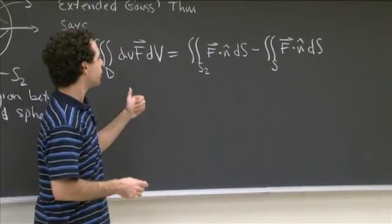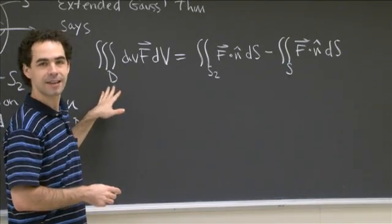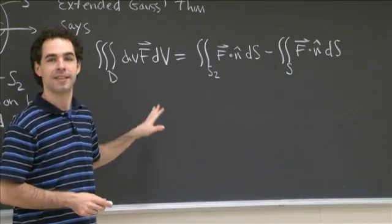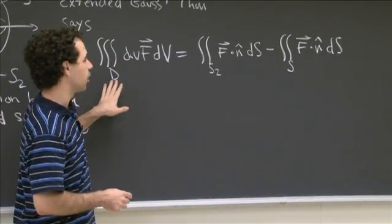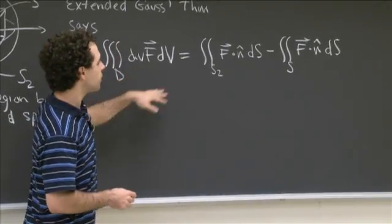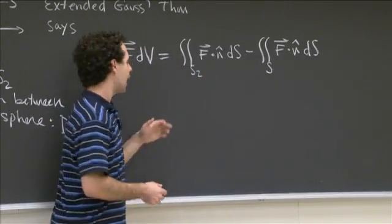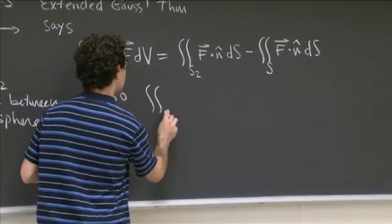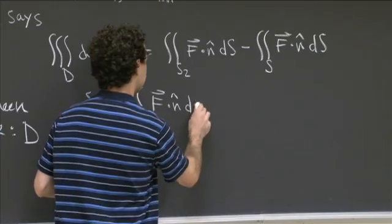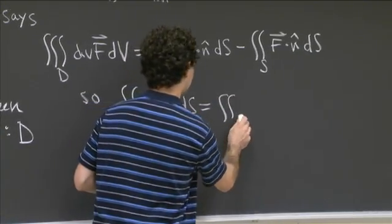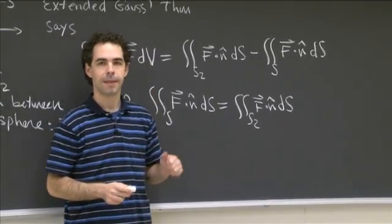The signs differ because I'm taking the normal to be outward-pointing from D on both surfaces — pointing away from the origin. The normal pointing away from the origin on the cube points into the solid region D, not out of it, which is why the minus sign appears. Now, F is well defined everywhere in D — the only place F was badly behaved was the origin, and this region doesn't contain it, which is why this trick works. We already computed that div F equals 0 everywhere it's defined, so the triple integral over D is just 0. Therefore, the flux through the cube equals the flux through the sphere S2.